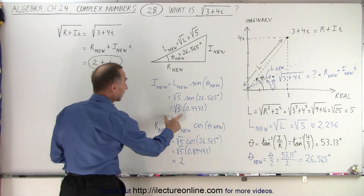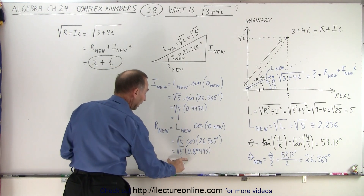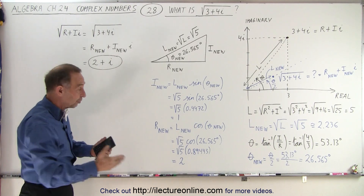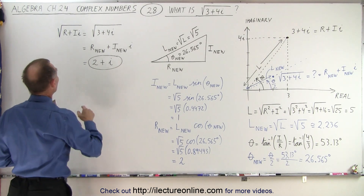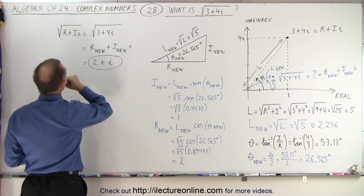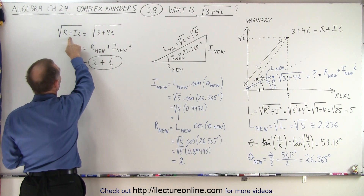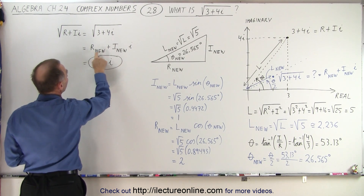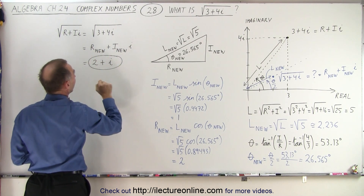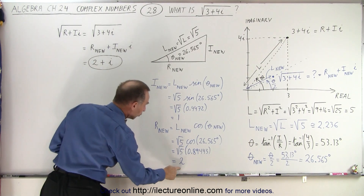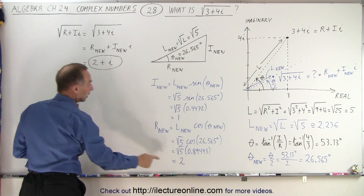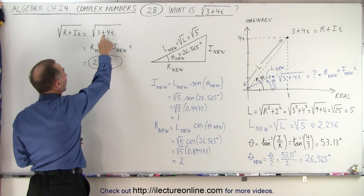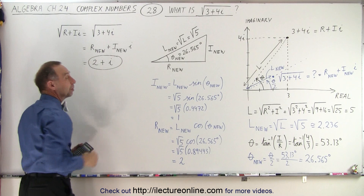Which means now we have the length of the imaginary part and the length of the real part of our new number. The new number, of course, is the square root of our original complex number. So that means if we take the square root of our original complex number, it will be equal to R_new plus the imaginary_new times i. R_new is 2, the imaginary part is 1, and 1 times i is simply i. Therefore, the square root of our original complex number is 2 plus i.